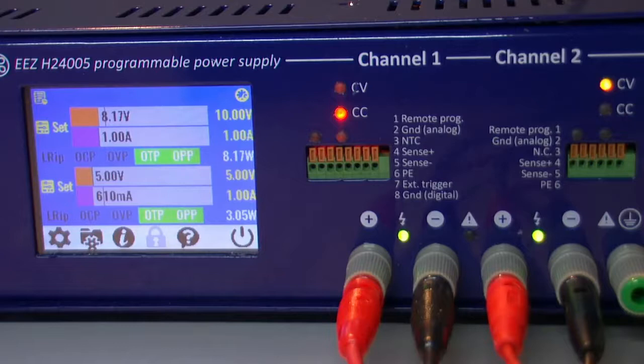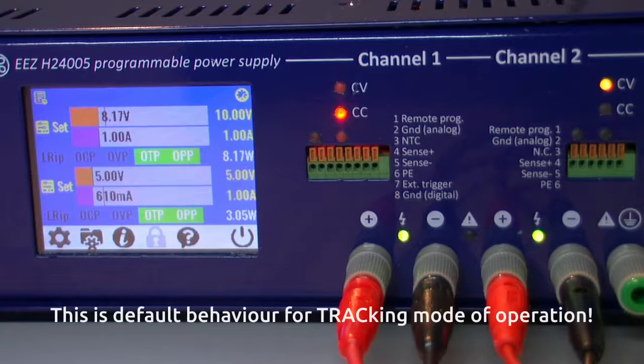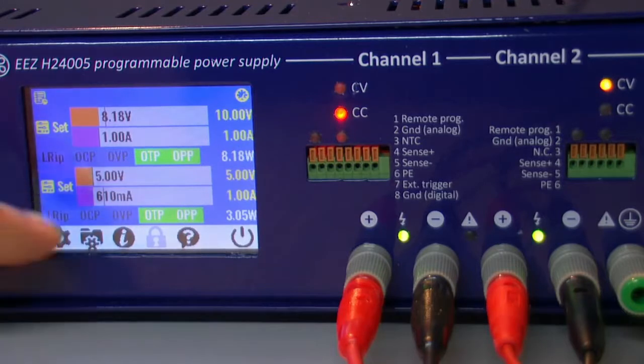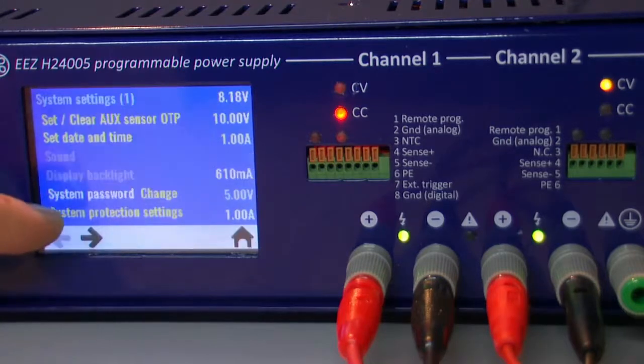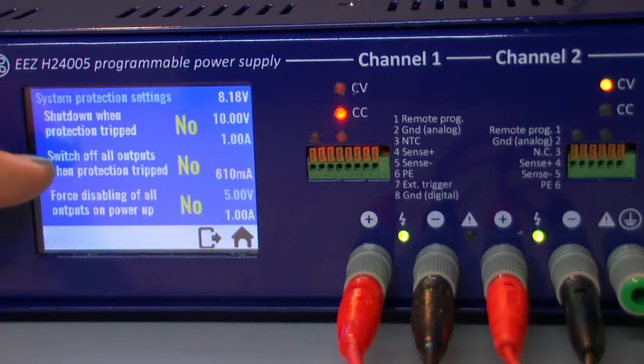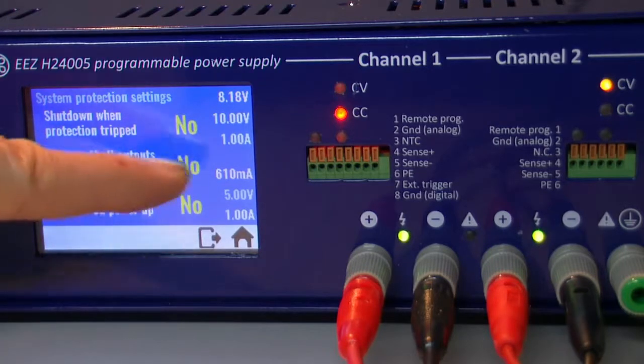Another possibility is also related to protection tripping. Instead of switching off the complete unit we can switch both outputs if only protection tripped on one channel. Again we need to go to system settings and under system protection settings there is another option: switch off all outputs when protection tripped.